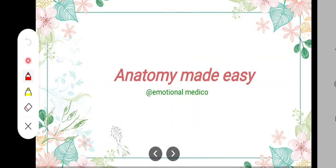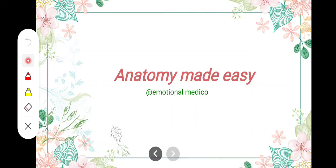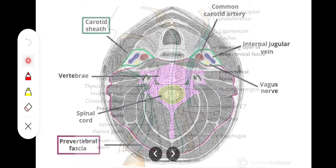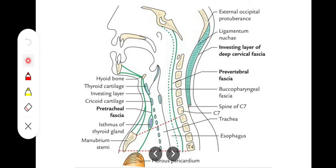In this video we are going to talk about the prevertebral fascia. Just like the pretracheal fascia, this is also a deep cervical fascia, present in front of the vertebrae. It encloses the prevertebral muscles and forms the floor of the posterior triangle of the neck, covering all the prevertebral muscles as you can see.